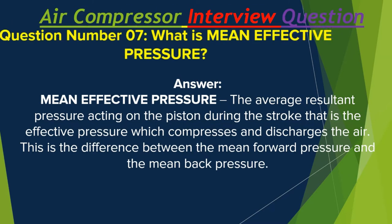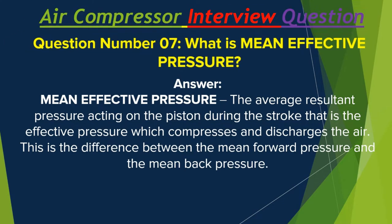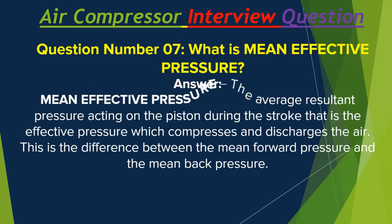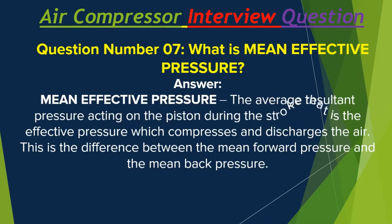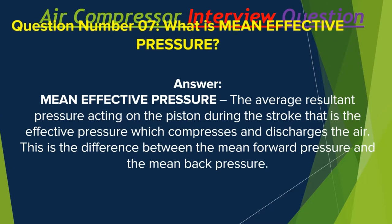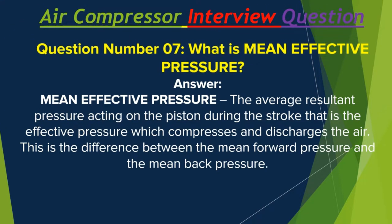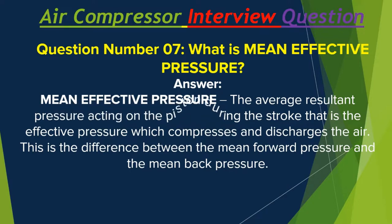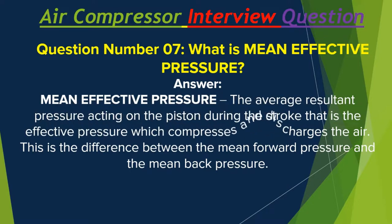Question number 7: What is mean effective pressure? Mean effective pressure: the average resultant pressure acting on the piston during the stroke — that is, the effective pressure which compresses and discharges the air. This is the difference between the mean forward pressure and the mean back pressure.